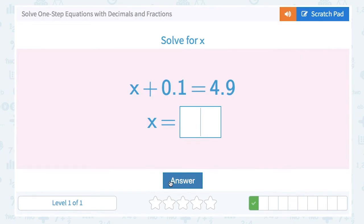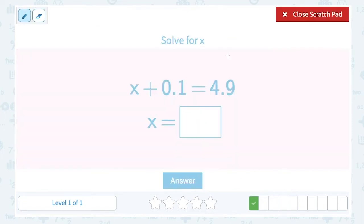Okay, x plus 0.1 equals 4.9. First step again is to rewrite the equation: x plus 0.1 equals 4.9. I want to get that x alone, so I'm going to subtract 0.1, and I always do the same thing to both sides of my equation.